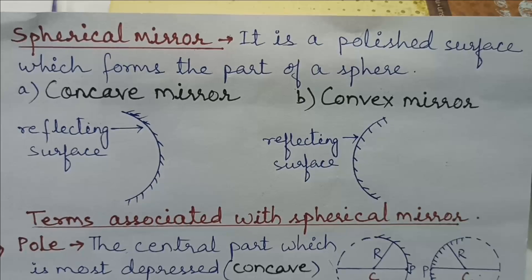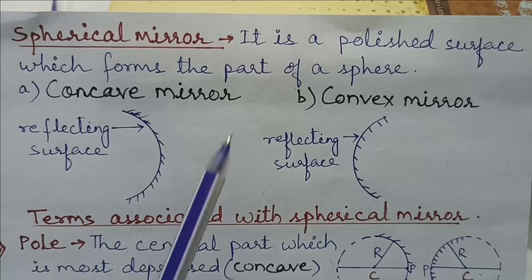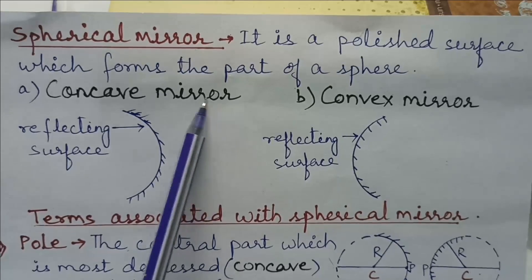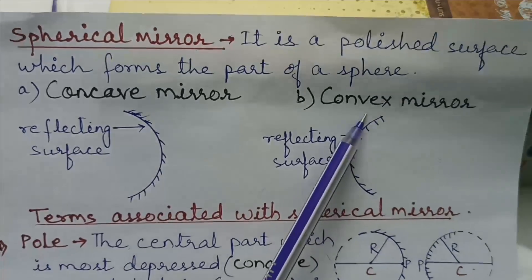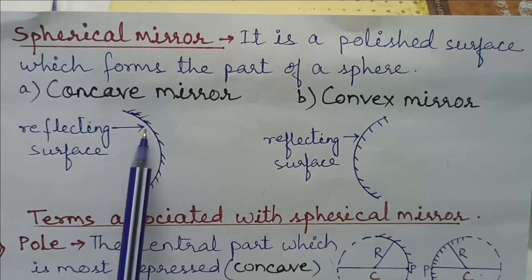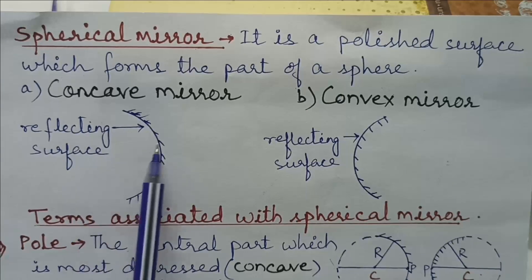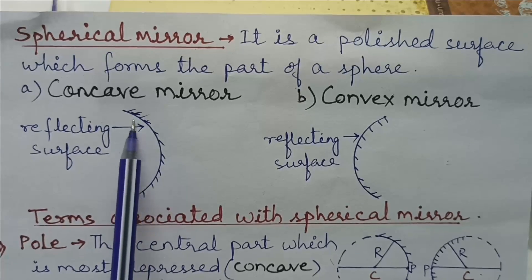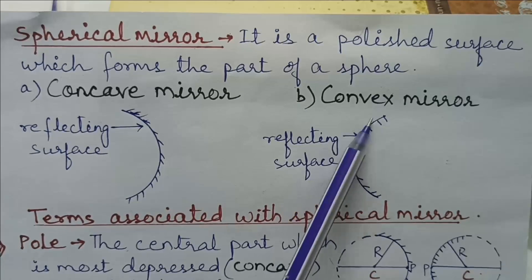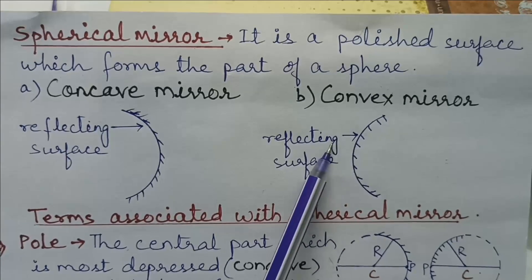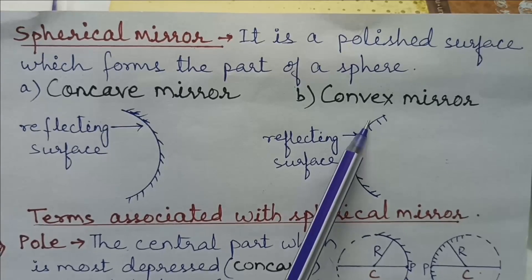Now let us discuss about spherical mirror. It is a polished surface which forms the part of a sphere. There are two types of spherical mirror. One is concave mirror and the other one is convex mirror. A concave mirror is a spherical mirror which, when looked from the reflecting side, is depressed at the center and bulging at the edges. A convex mirror is a spherical mirror which, when looked from the reflecting side, bulges at the center and is depressed at the edges.